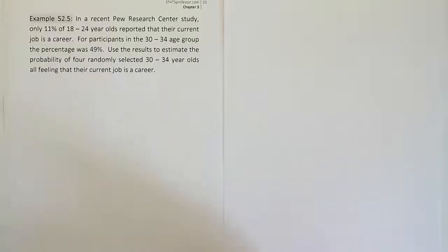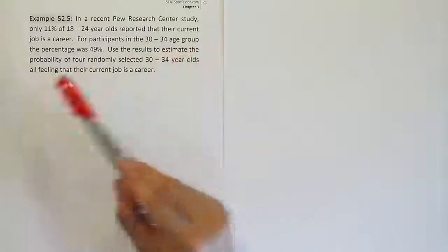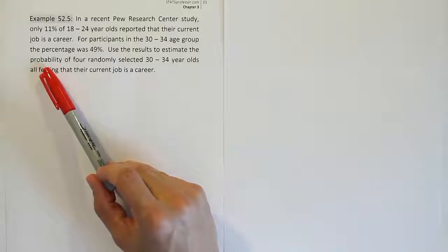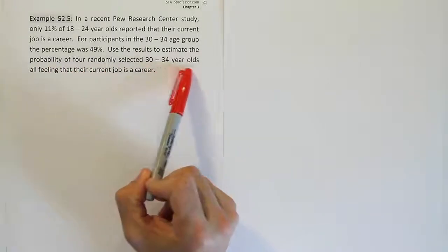Let's first try to figure out what they're asking us to do in the problem. It says clearly that they want us to estimate a probability. So they want us to do a probability calculation. We're using four randomly selected 30 to 34 year olds.